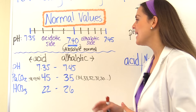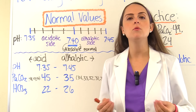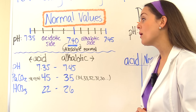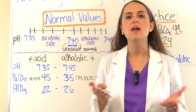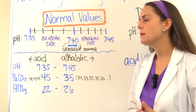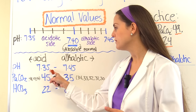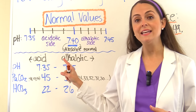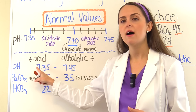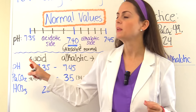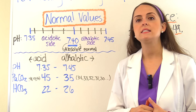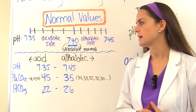Before you even attempt to answer ABG problems, you have to commit some normal lab values to your memory. First is blood pH. A normal blood pH is 7.35 to 7.45. Anything less than 7.35 is considered acidotic. Anything greater than 7.45 is considered alkalotic.